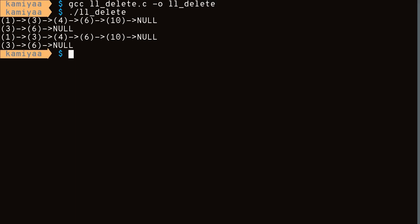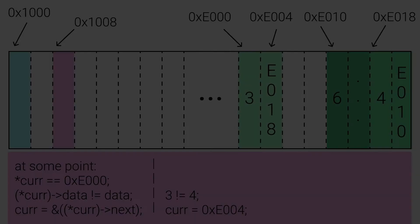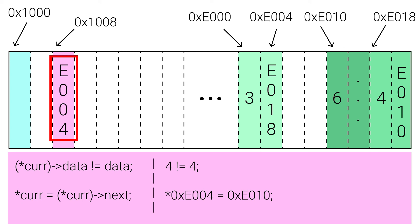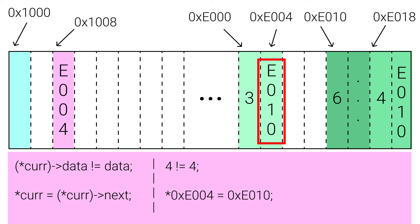Let's look at a visual diagram of a delete scenario. We're trying to delete node 4, which is after node 3 and before node 6. Our while loop runs until *cur equals E000 (node 3), checks that 3 does not equal 4, and sets cur to the address of node 3's next field. We check again: 4 equals 4, so we break out. We check if *cur is null — it's node 4, so it's not. We set *cur equals to *cur->next: since *cur is node 4's address and also the value of node 3's next field, this sets node 3's next field to node 6's address, essentially removing node 4 from the linked list.